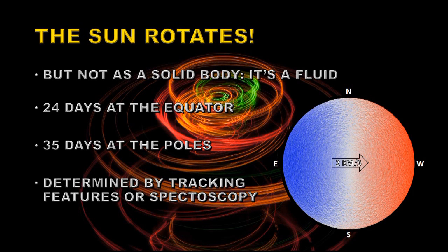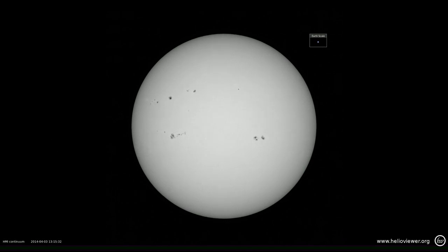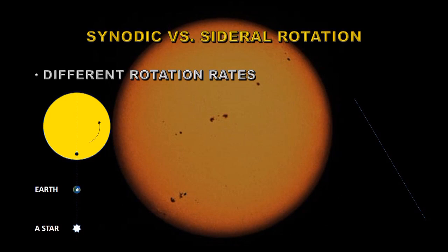Let's take a look at a video of the Sun rotating. This video encapsulates about 28 days of solar rotation. Now you can see the sunspots rotating from east to west across the image.